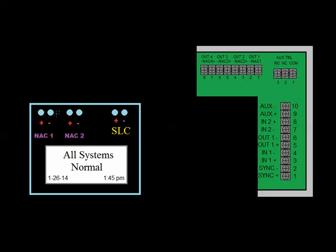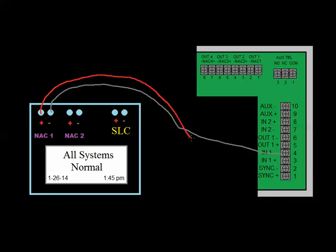So if we were going to trigger this, we wanted to use one of these, the most common thing that you would do is use one of these horn outputs or NAC outputs on this panel and go into the input of this FCPS. So I'm going to take negative and go to the negative terminal and then positive and go to the positive terminal. Now, if this was the only FCPS in the chain, I need an end-of-line resistor, right?